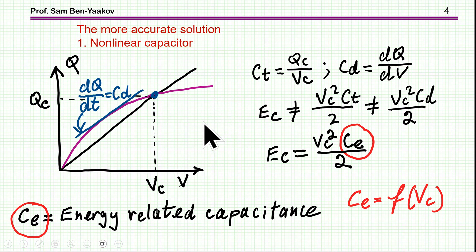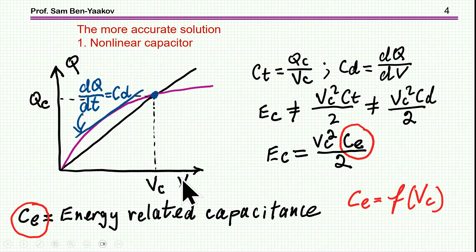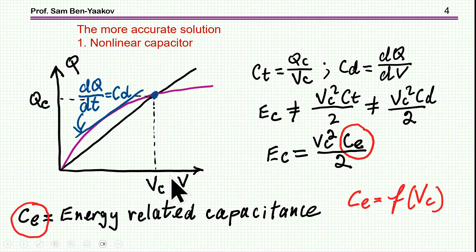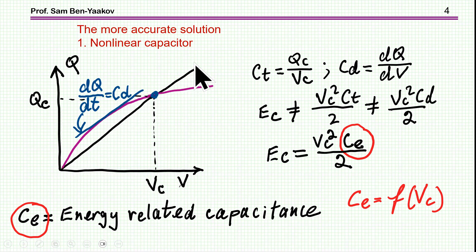To do this, I'm first looking at the issue of a non-linear capacitor. If I plot the charge as a function of voltage, this is how we represent a capacitor — accumulating charge for a given voltage, and the ratio of which is of course the definition of capacitance: charge over voltage. If this relationship is linear, this will be a linear capacitor. If it is non-linear, like here, this will be a non-linear capacitor.